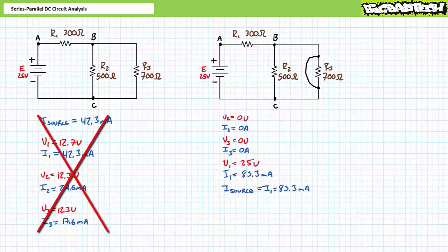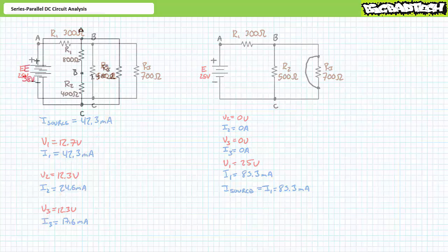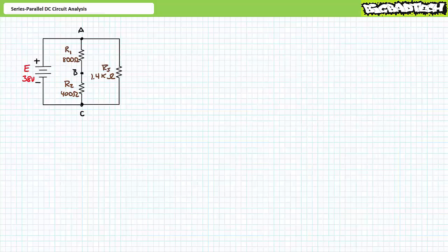Long story short, it depends upon the nature and the location of the open or short. In every scenario, the open or short has fundamentally changed the nature of the circuit, and this change may render all previous analyses invalid. Let's try another illustrated example of series-parallel circuit analysis — consider another series-parallel circuit also consisting of three elements.